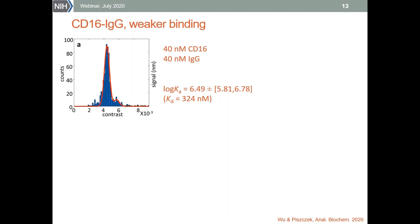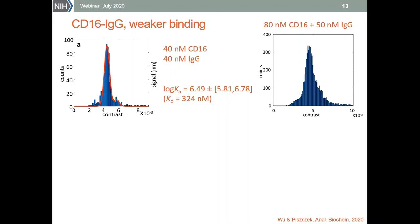On the side of weaker binding, the mass photometry limitation is related to the maximum concentration we can use. Here is an example: CD16 binding, where the IgG antibody is a ligand in a one-to-one binding system. This mass distribution was obtained for a mixture of 40 nanomolar CD16 and 40 nanomolar IgG antibody. The complex population peak is relatively small and we still see a lot of free antibody, which signifies weaker binding.